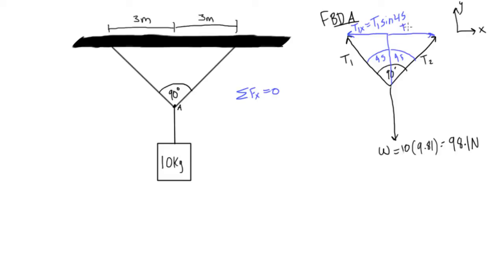And t2 x, similarly, also by simple trigonometry, has to equal t2 times sine 45, kind of running out of room there, that's okay.